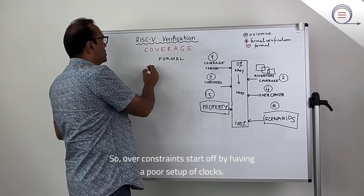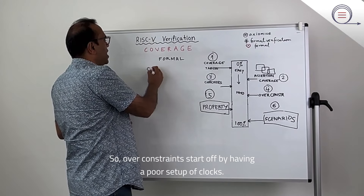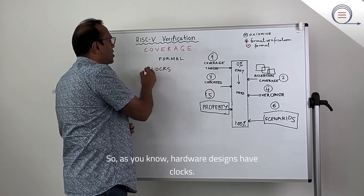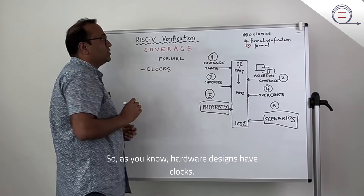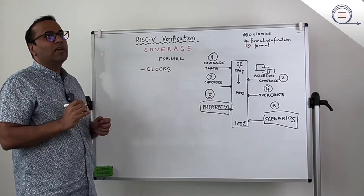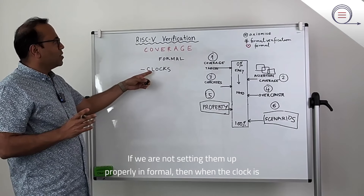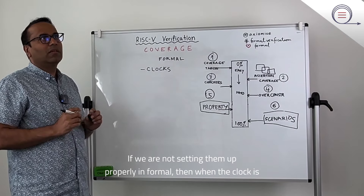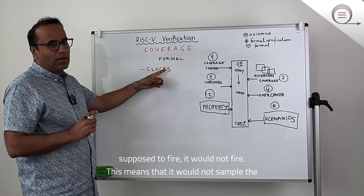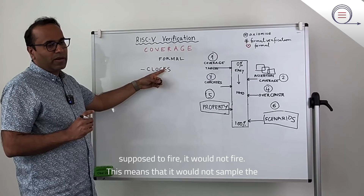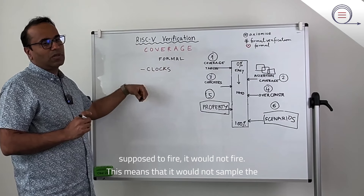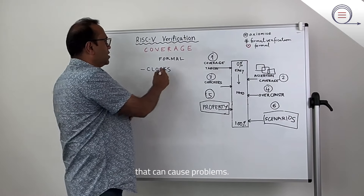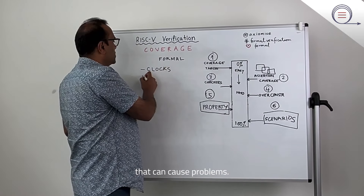Over-constraints start off with a poor setup of clocks. As you know, hardware designs have clocks. If we are not setting them up properly in formal, then when the clock is supposed to fire, it would not fire, which means it would not sample the state of the design in the testbench. So that can cause problems.